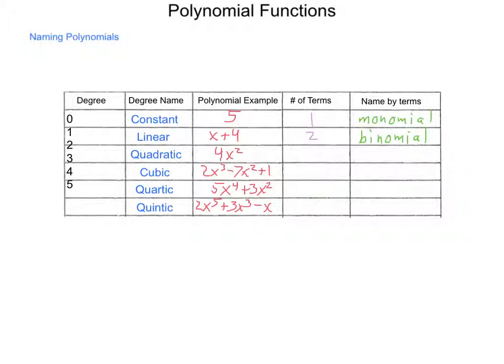Then, in our quadratic, again, we have only one term, 4x², so that's a monomial again. Now, our cubic, 2x³ - 7x² + 1, has three terms, and a three-term polynomial is called a trinomial.